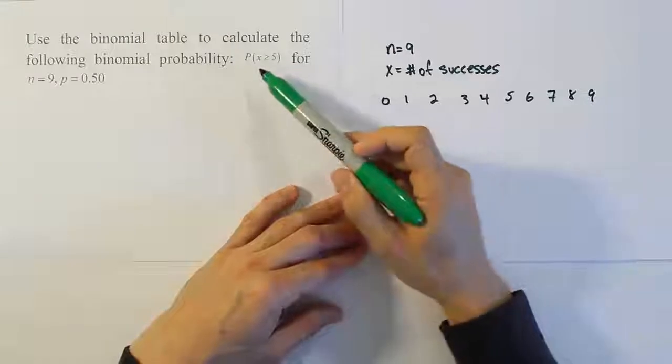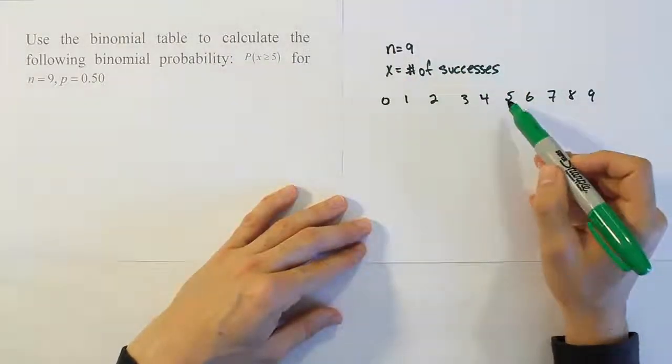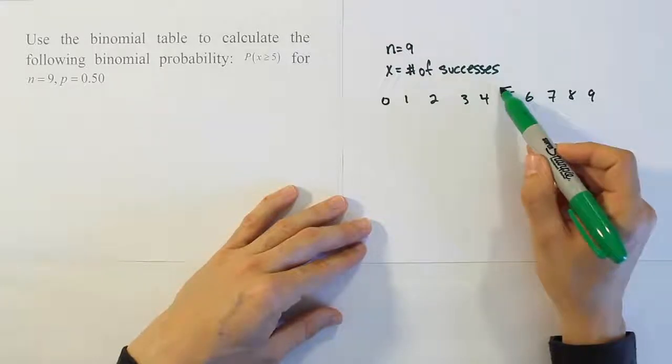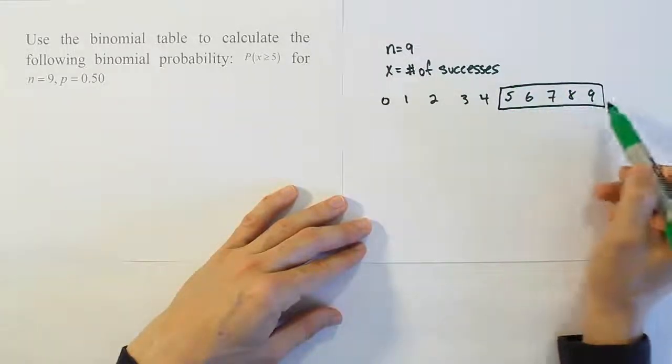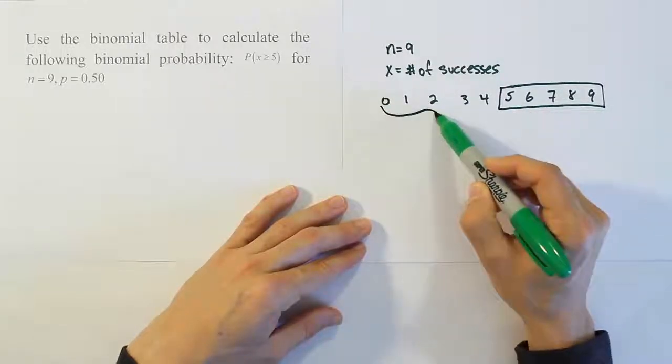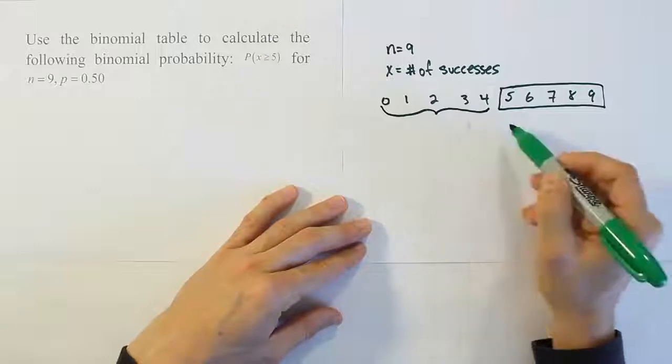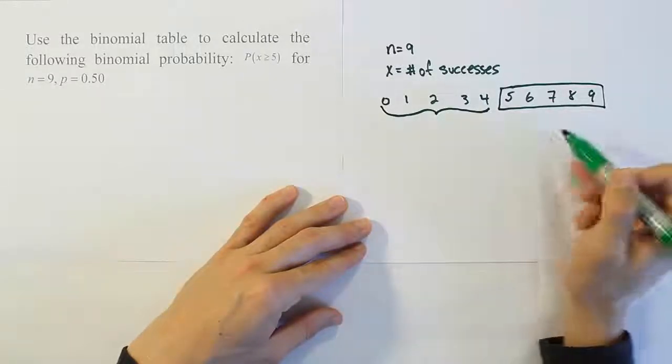Now, our problem asks for the probability that the number of successes is greater than or equal to 5. Greater than or equal to would include 5, so we're talking about this chunk from 5 to 9. And then there's this other portion here, the leftovers. One thing I know for sure is that if you added this part to this part, you have to get 1.